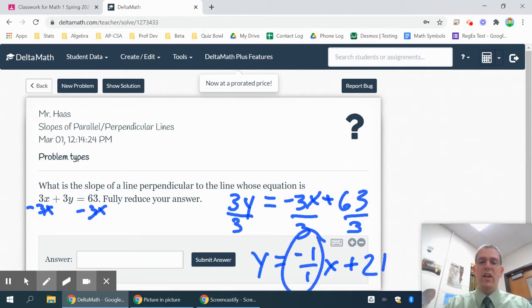Perpendicular means I change the sign and flip it. So flipping 1 over 1 really doesn't make a difference, but changing the sign does because it goes from being a negative 1 to a positive 1. And when I reduce it, 1 over 1 does equal 1. So that would be your answer.